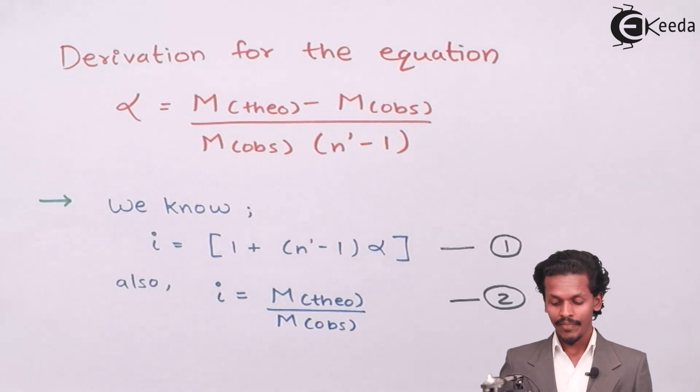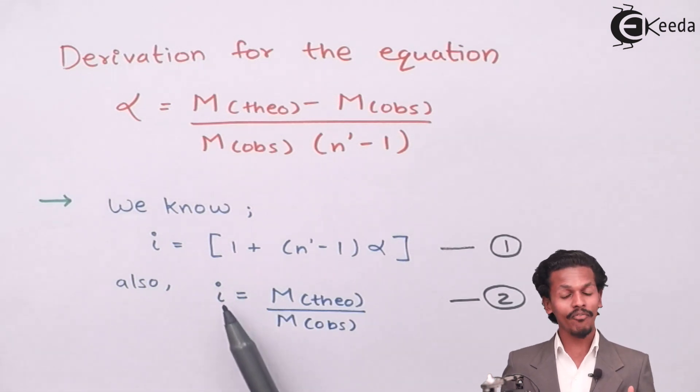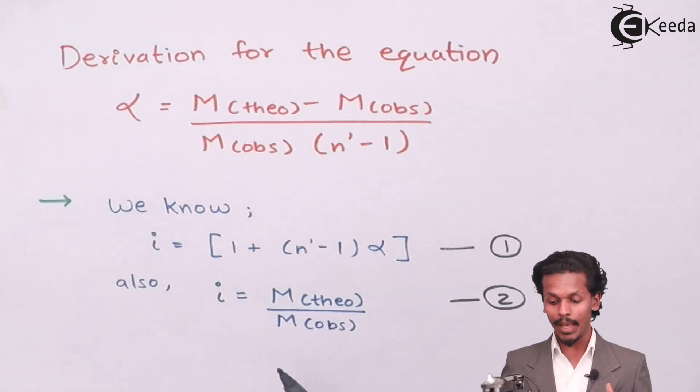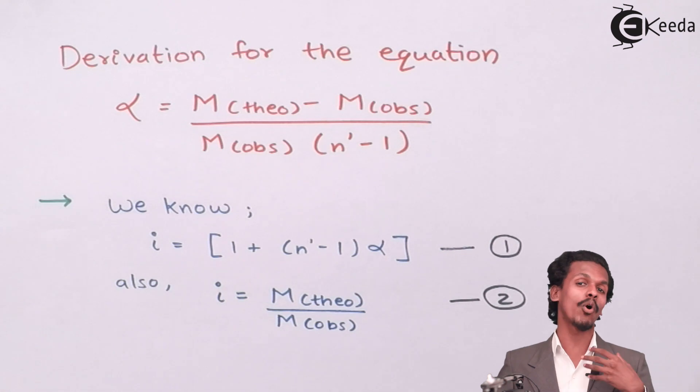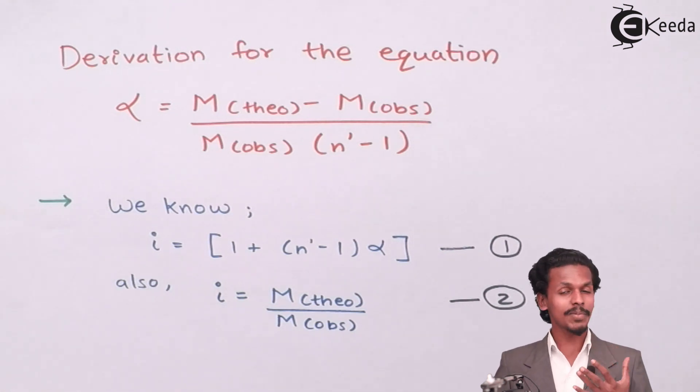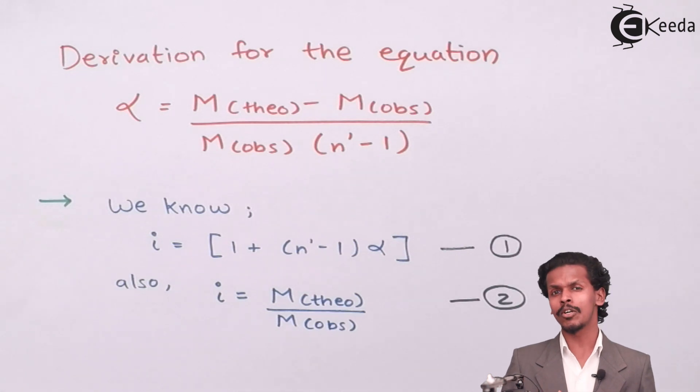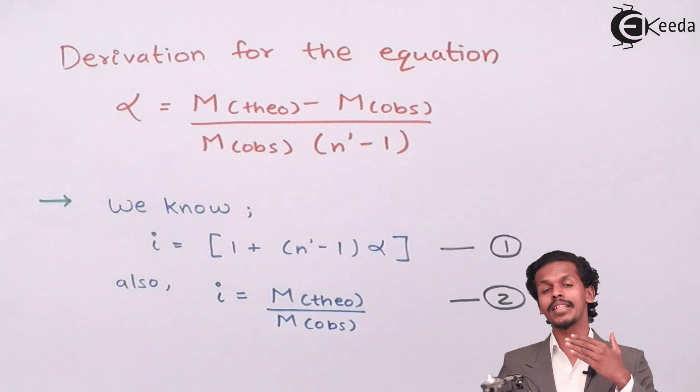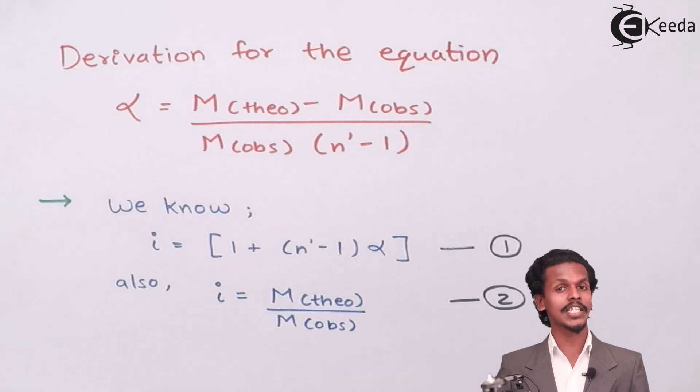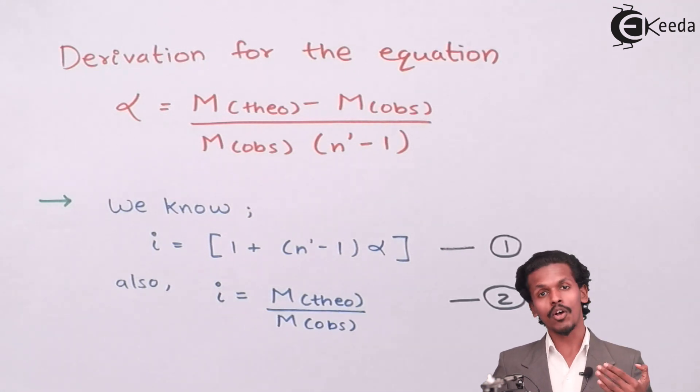But we should also know that when it comes to Van't Hoff factor, Van't Hoff factor is M theoretical divided by M observed. In this case the M is nothing but the molecular weight of the solute or the substance that is dissolved in the solution. So because the colligative property is inversely proportional to the molar mass of the solute, therefore it has been reversed. So the Van't Hoff factor which you see used to be observed divided by theoretical is now been converted for molar mass into the molar mass of theoretical divided by the molar mass of observed.